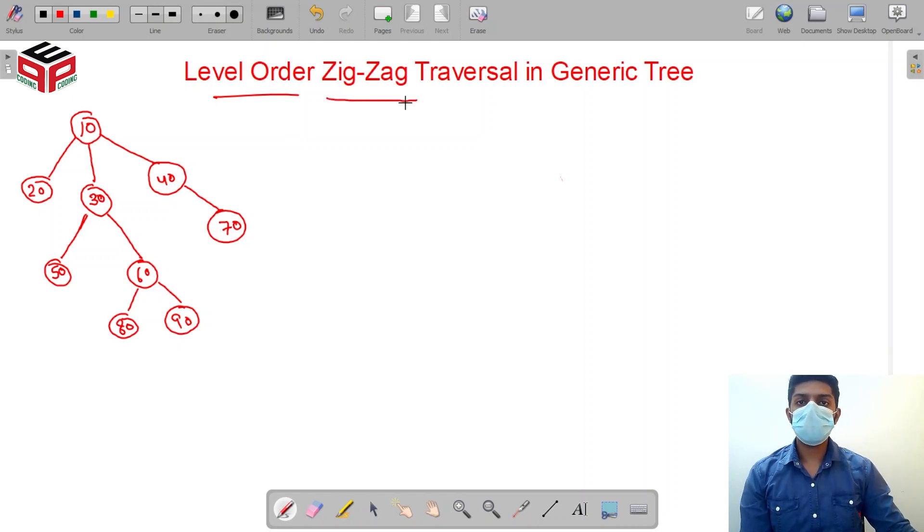Now how exactly I'm expecting the output to be is if I'm traversing first level left to right, the next level should be traversed in opposite manner, that is 40, 30, 20. So the output should be 10, after that 40, 30, 20.